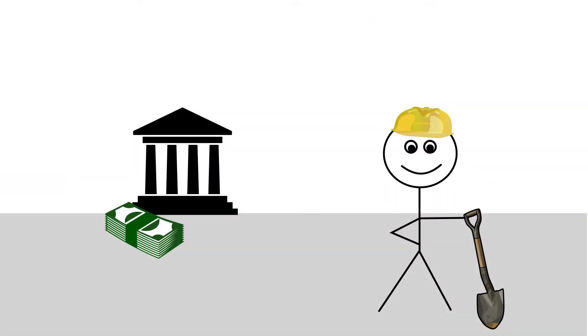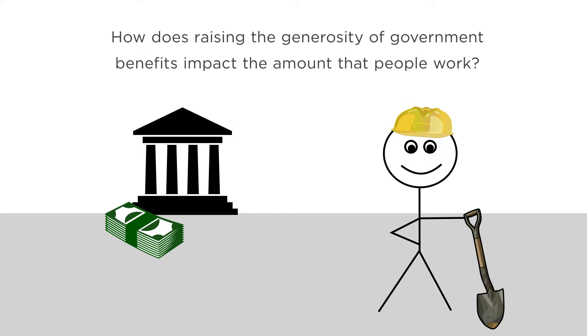Let's return to our earlier example of measuring the effect of government benefits on labor supply to see how these four steps might play out in practice. A well-posed hypothesis might be, how does raising the generosity of government benefits impact the amount that people work? What would a convincing empirical methodology look like? Methodologies that simply examine time series data on how the level of government benefits and labor supply change over time are bound to run into the same causation and correlation confusion we talked about earlier.